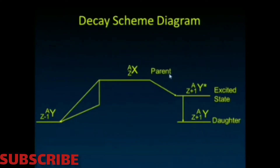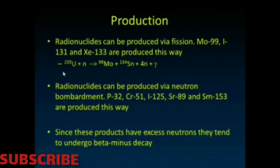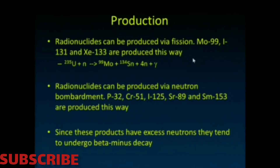Some radionuclides can be produced via more than one scheme — for example, by isomeric transition and by giving off a gamma ray, as well as by giving rise to a beta particle. Some radionuclides can be produced via fission; molybdenum-99, which we use as a generator for technetium-99m, is produced that way — most of the molybdenum we get comes from nuclear power plants. We can also produce them via neutron bombardment; P-32 and I-125 are produced this way.